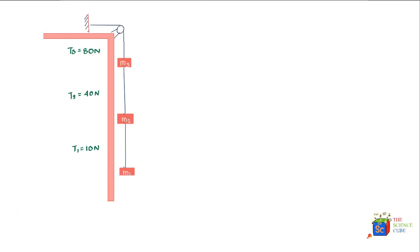What we have here is a bunch of masses — M1, M2, and M3 — strung up the way it's shown in this diagram, and the entire system is attached to a rigid wall. The tension in the strings is T1, T2, and T3, and the values are also given. The problem is asking us: given this information, what is the value of mass M1, M2, and M3?